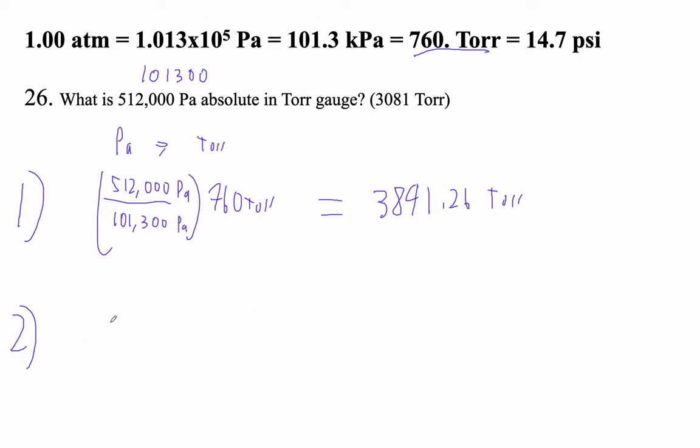So absolute is gauge plus 1 atmosphere. This is absolute. So 3841.26 is the gauge pressure plus 1 atmosphere. Now we're in Torr, so we've got to use 1 atmosphere in Torr.